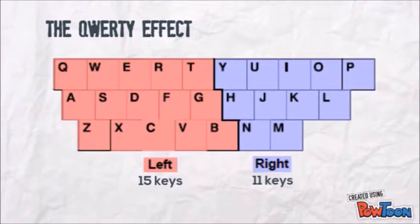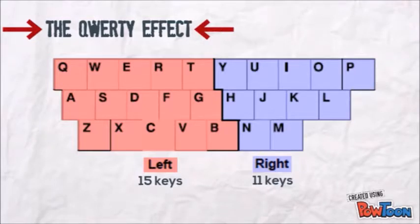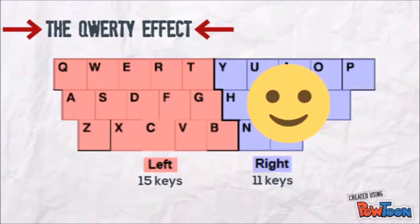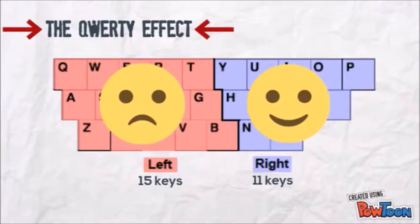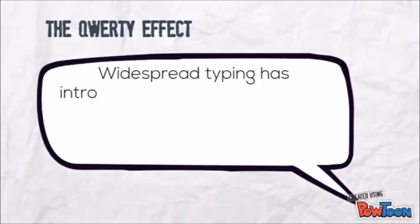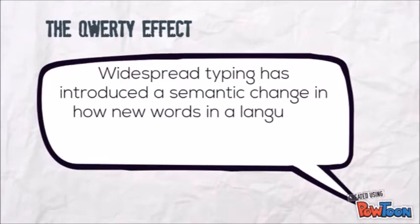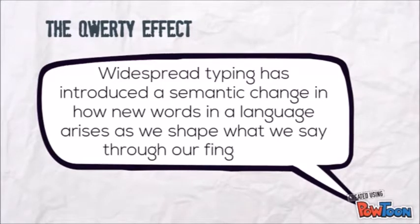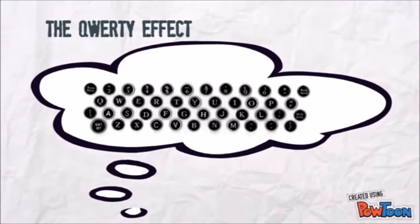Some researchers believe that this asymmetrical layout of the characters has impacted the connotation we associate with words. They call this the QWERTY effect, which claims that words spelled with more letters on the right side of the keyboard generate more positive feelings than those with more letters on the left side. This was believed to be because keys on the right side were easier to type, regardless of whether the typist was right or left-handed. They found that right-side words, especially those created after the QWERTY keyboard, have more positive feelings than left-side words.